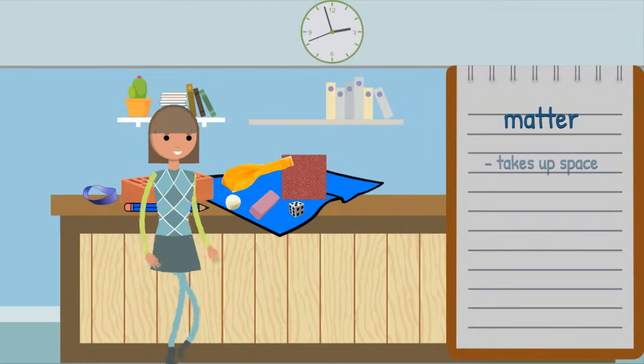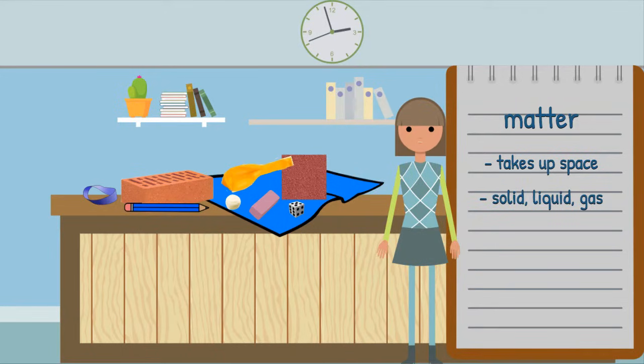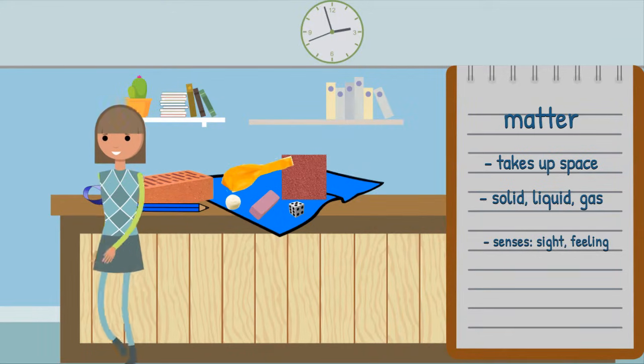Matter is anything that takes up space and can be a solid, liquid, or gas. Physical properties can be used to describe any of these states. Many properties can be found by using some of our senses, like sight and feeling. We can see color and shape, and we can feel weight and texture. Let's learn about some properties by sorting some items.